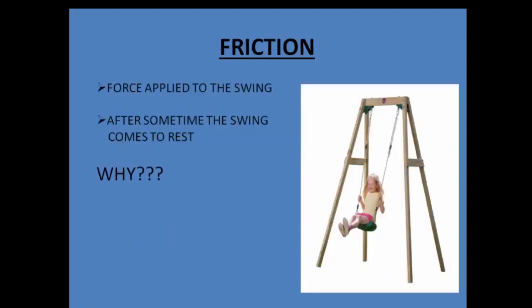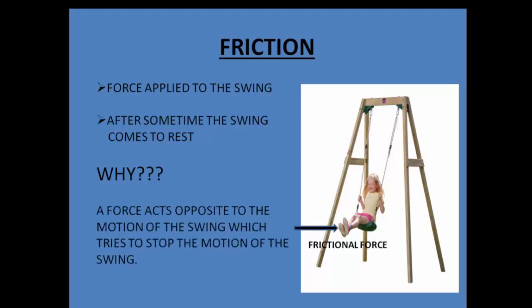Now let us take a small example. You all must have sat on a swing. What happens when somebody pushes you? When somebody applies a force, the swing starts swinging. What happens when he stops applying force? After some time the swing automatically comes to a stop. This is because of the frictional force applied opposite to the direction of the motion of the swing, which ultimately restricts the motion and brings it to a halt.